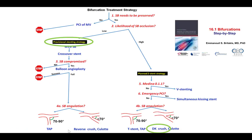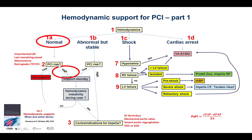When it comes to bifurcation stenting technique, there are two key strategies: either a provisional or a planned two-stent strategy. In this case, we decided to go for provisional because there did not appear to be significant disease in the ostia of the LAD, circumflex, and ramus. And of course, there is always the option of putting a second stent if there is a compromise of the side branch, which are wired before placing the stent.